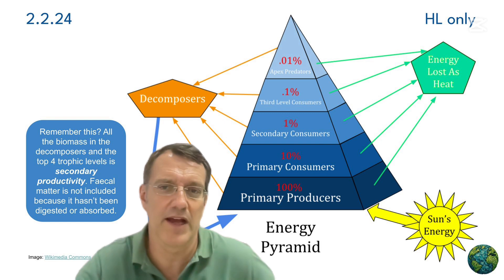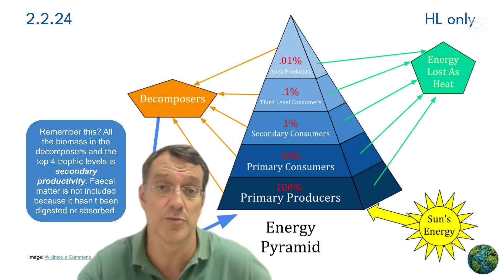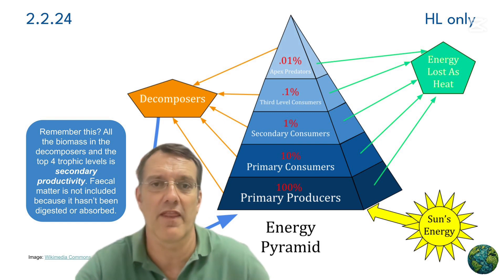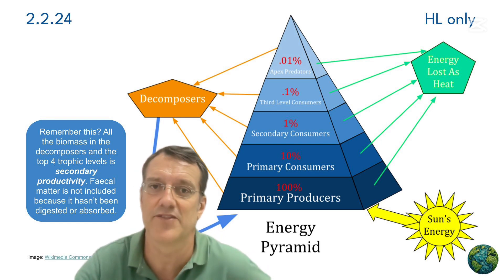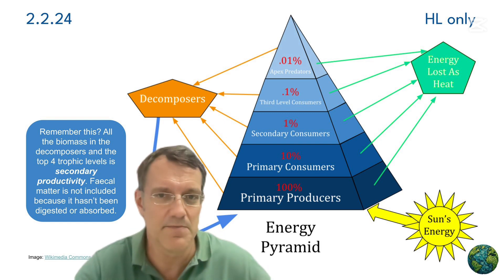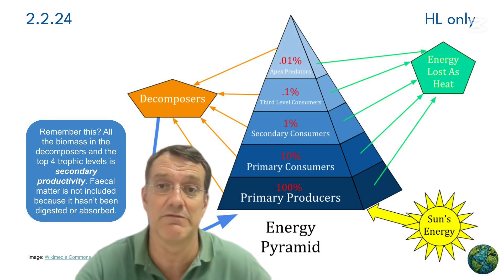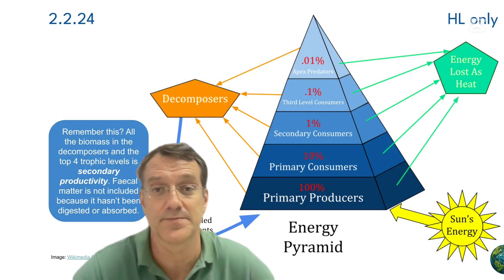Secondary productivity is more complex to measure than primary productivity because it involves tracking not just what organisms eat, but how efficiently they convert that food into new biomass. These measurements help us understand the true environmental cost of producing food at different trophic levels.